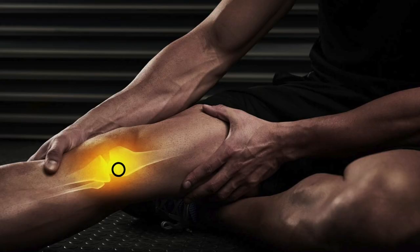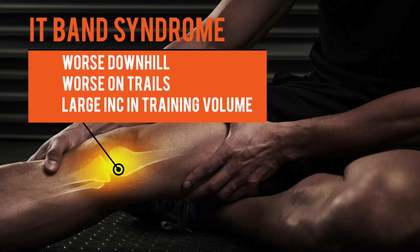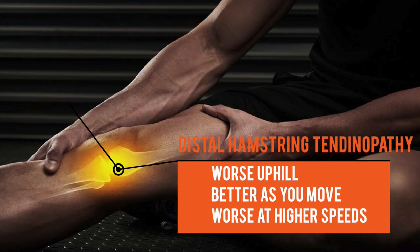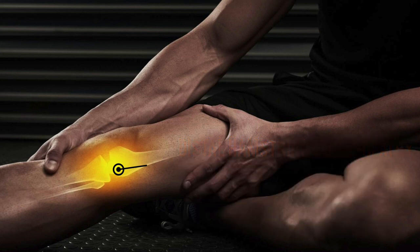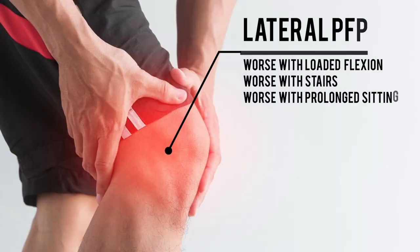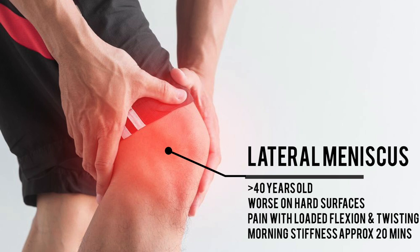Typically with IT band syndrome, pain is worse going downhill, on narrow trails, and with a large increase in training volume. Distal hamstring tendinopathy, by contrast, is worse going uphill, gets better as you go, and the faster you go the more it hurts. Lateral patellofemoral pain syndrome is typically worse with loaded flexion, stairs, and prolonged sitting. Lateral meniscus injuries also present with lateral knee pain, but these patients are typically over 40, worse on hard surfaces, have pain with loaded flexion and squatting, and about 20 minutes of morning stiffness.